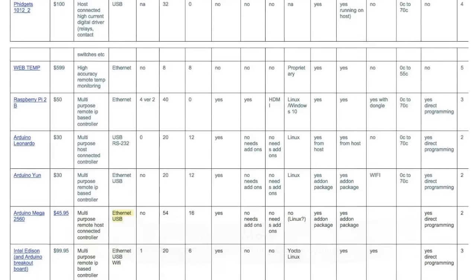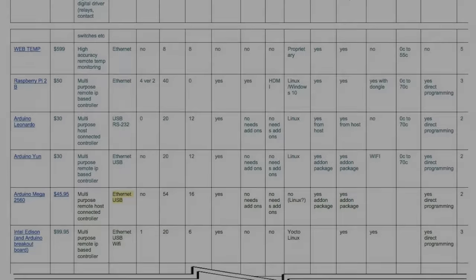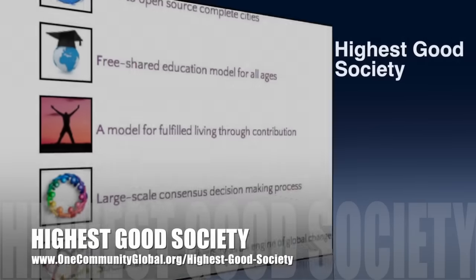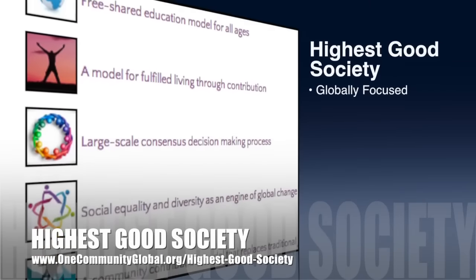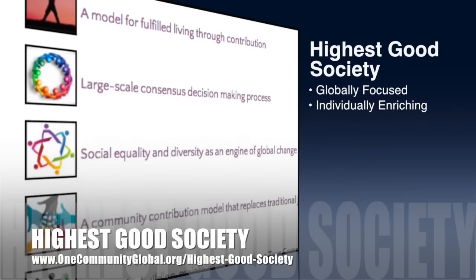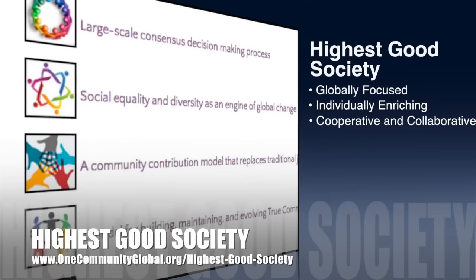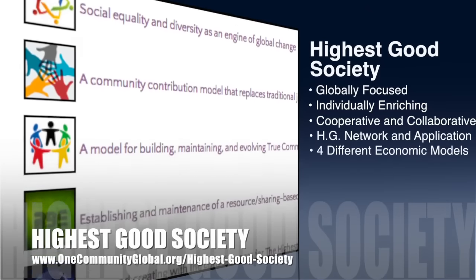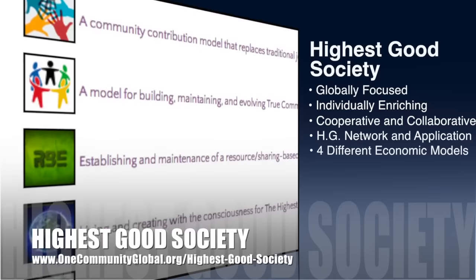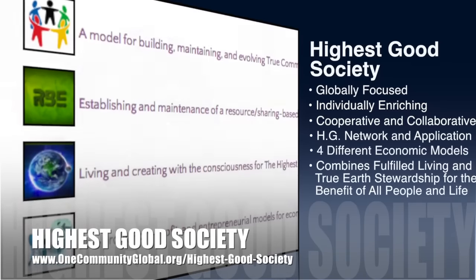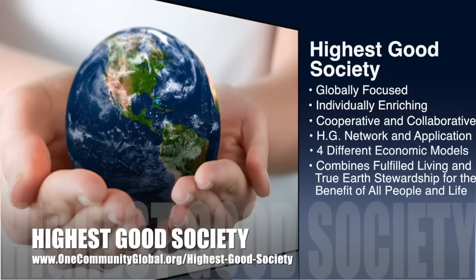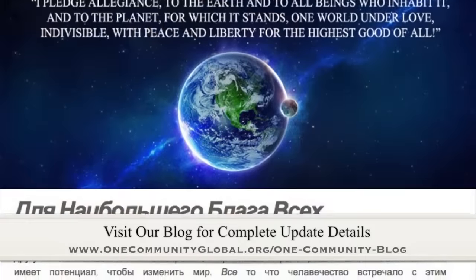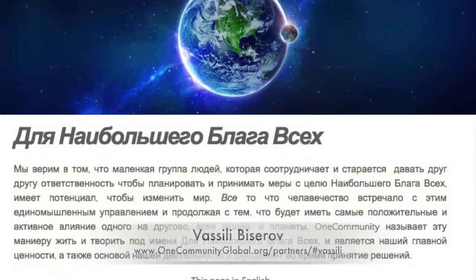One Community's approach to highest good society is globally focused, individually enriching, cooperative and collaborative. It includes a highest good network and application, four different economic models, and combines fulfilled living and true earth stewardship for the benefit of all people and all life on this planet. This week Vasily Bizarov, writer, poet, and translator, finished translating our highest good of all web page into Russian — our first page translated into this language.